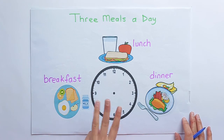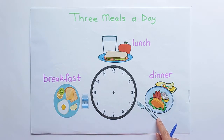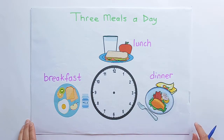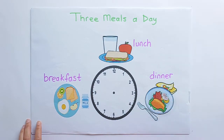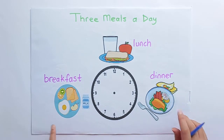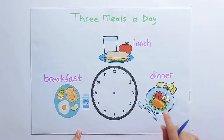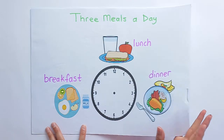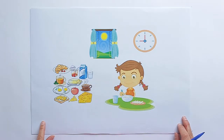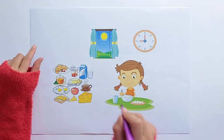We have three meals a day. What are they? The first one is breakfast. The next one is lunch. And the other is dinner. In the morning we have breakfast, in the afternoon we have lunch, and in the evening we have dinner.